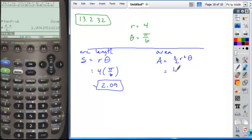And so if we plug in our given values, 4 for the radius and pi over 6 for the angle measure, what we can do is simplify what we have.